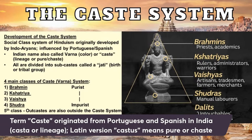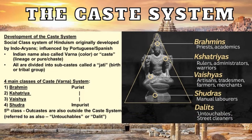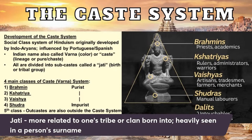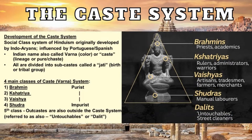The British noticed the caste system when they came into India. Jati is like your clan or tribe you're born into, or even religious community, and that can be seen sometimes in your surname. That's why sometimes people that are Dalits have certain surnames linked to that. For example, in India, the most famous one is Gandhi, which was supposedly linked to people who sold perfume.